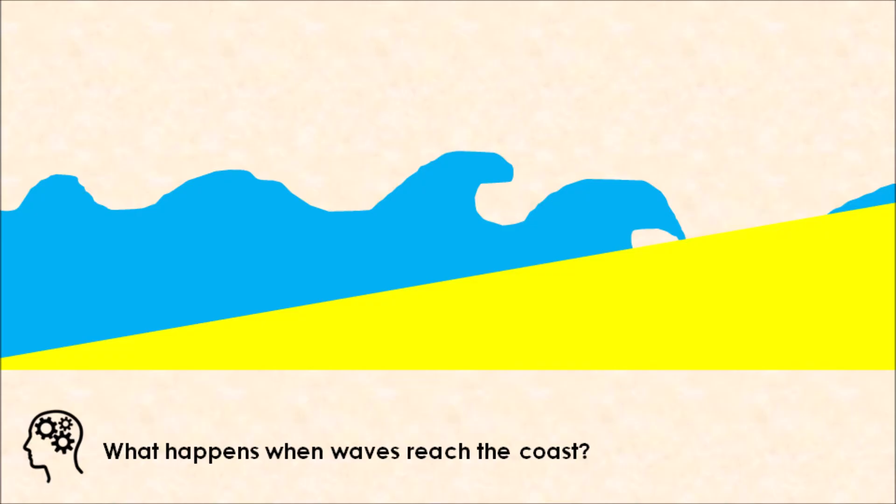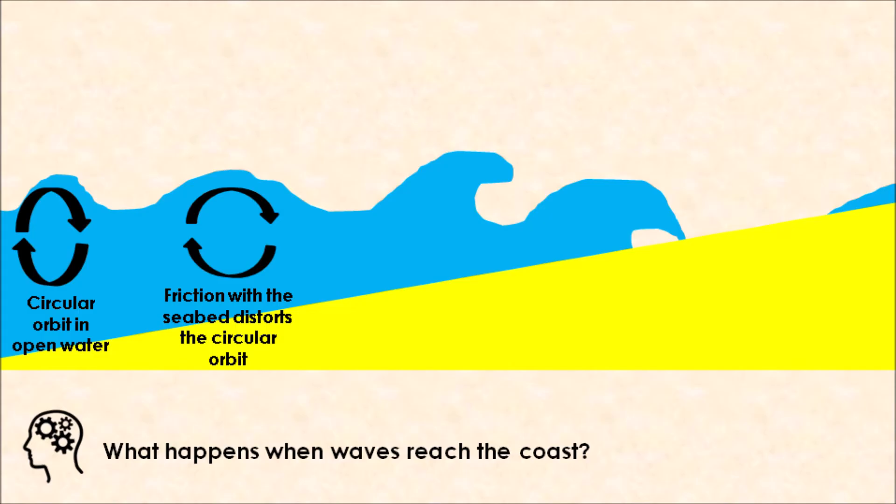What happens when waves reach and approach our coastline? Out in the deep ocean or deep sea, before they reach the coastline, waves will travel in a circular orbit in the open water. But as they approach the coastline, friction with the seabed actually begins to distort the circular orbit and make that wave become a more elliptical shape.